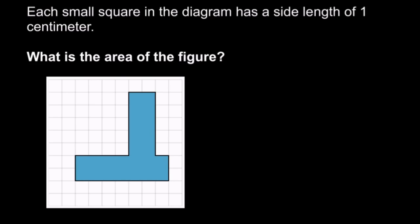Area is the total space it covers. We're also told that each of these little squares has a side length of one centimeter, so that means each of these squares is one square centimeter. We can find the area by seeing how many square centimeters does this figure cover.